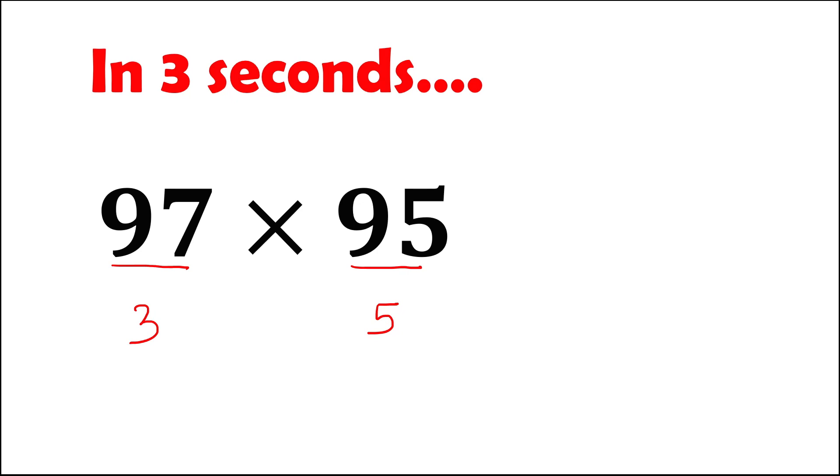Then you can do the subtraction. You can subtract 97 minus 5, that's 92, or this 95 minus 3, that's also 92.